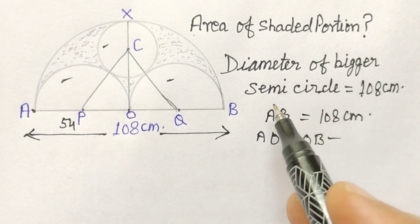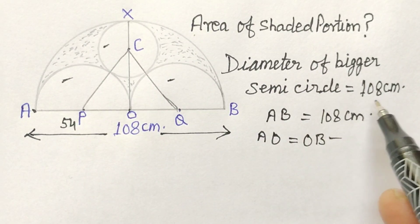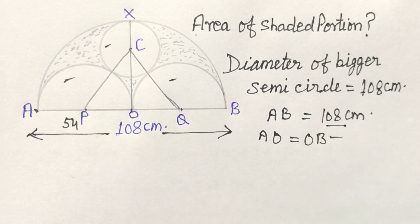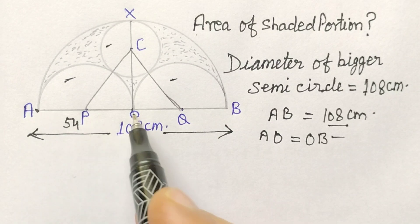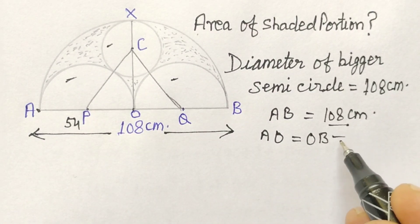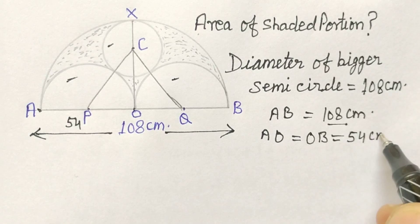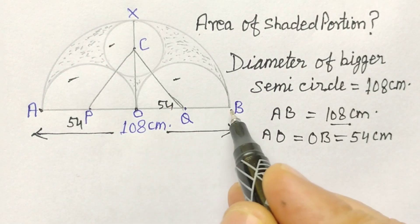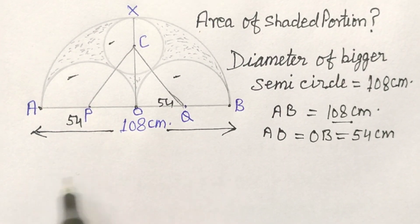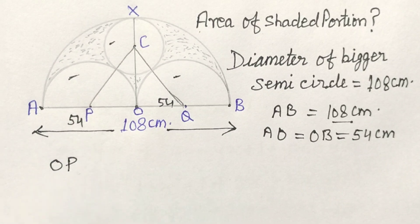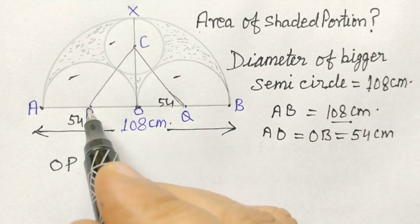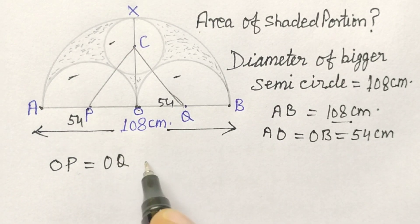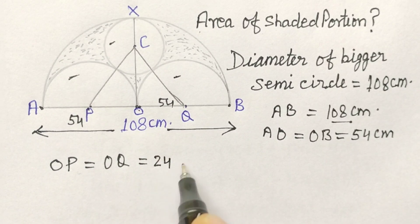We are given that the diameter of the bigger semicircle is 108 cm. So AB will be 108 cm. AO will be equal to OB, which is equal to 54 cm. OB is also 54. And OP will be equal to OQ, which is equal to 24 cm.